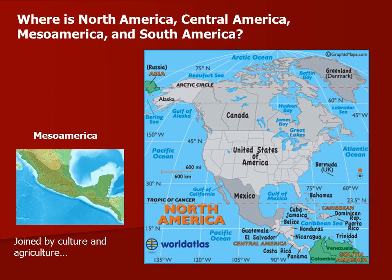Everything north of that — Panama, Costa Rica, all the islands in the Caribbean, Greenland, Russia, the Arctic Circle — all of that is considered North America. It does include Greenland, which is the largest island in the world. So North America together is the third largest continent on the planet. It's way more than most people think — most think North America is basically the United States and Canada, but it actually starts down near Colombia, not including Colombia.